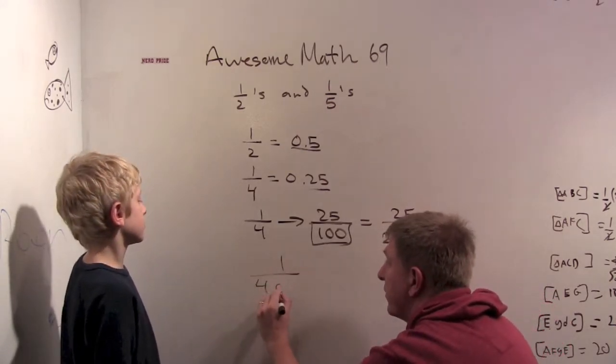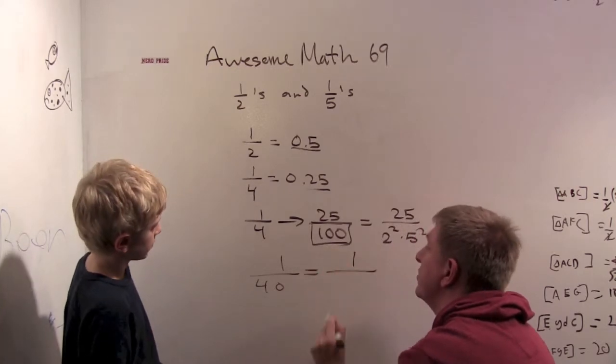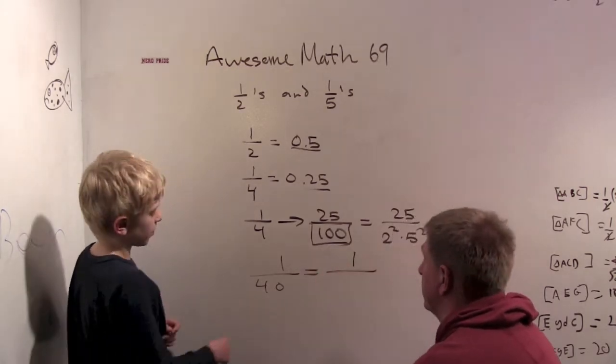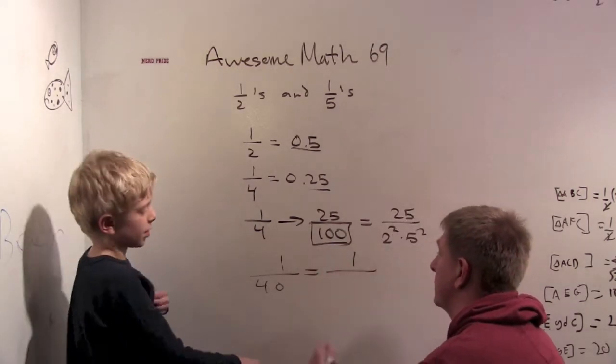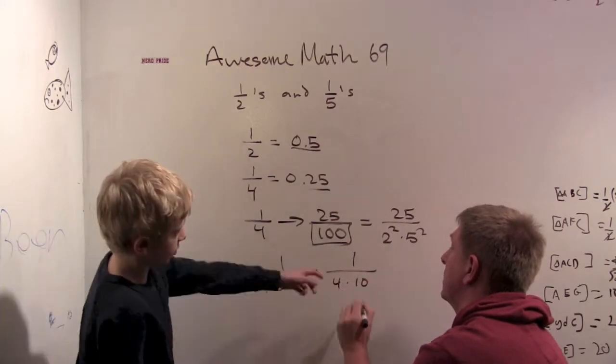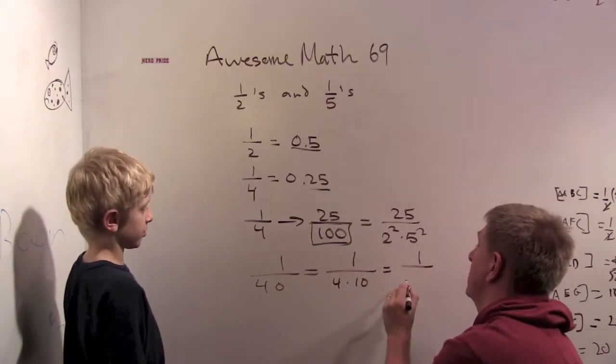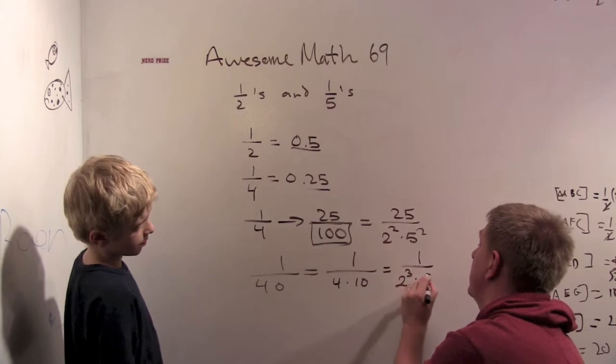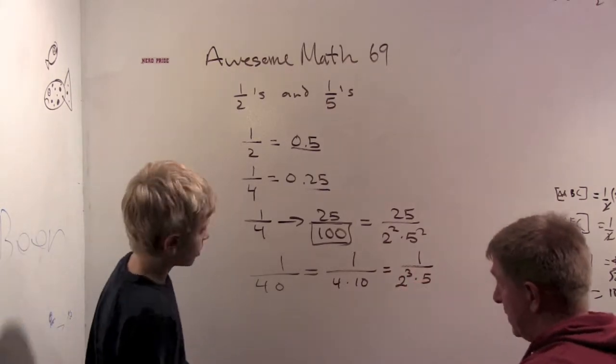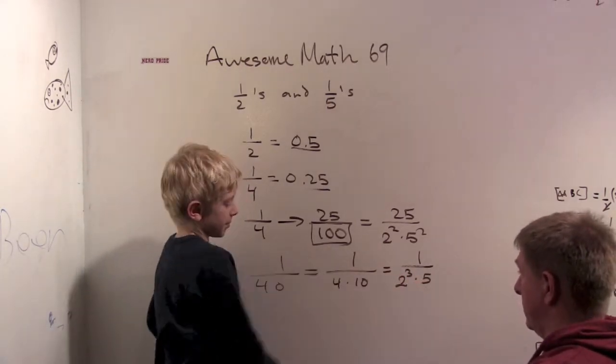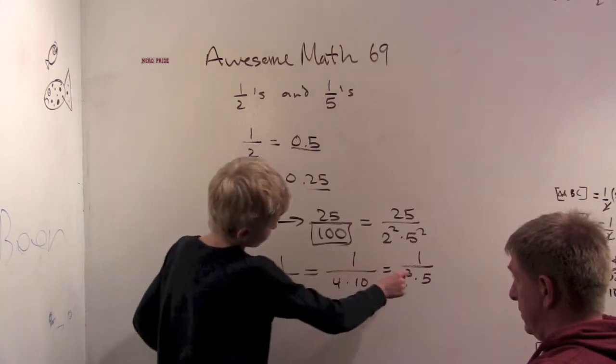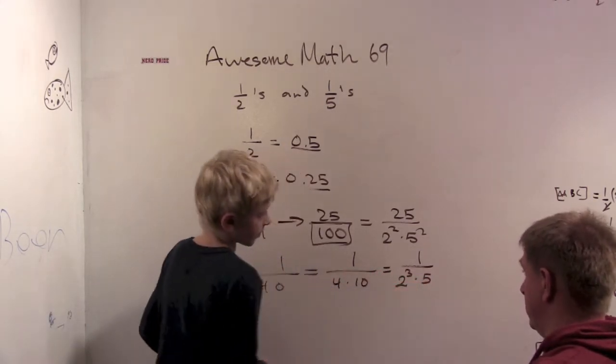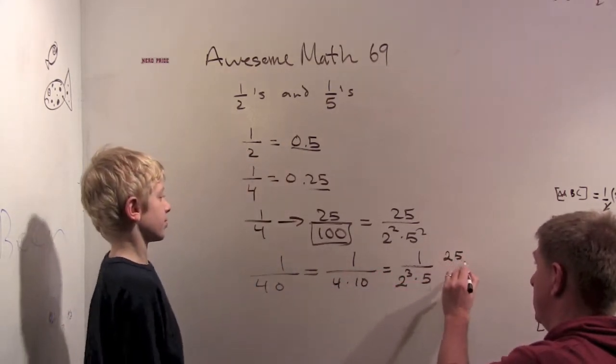Now when I have one-fortieth, what do I have on the bottom? How many twos? You have a four and a two times five, so that would make it three twos. Two cubed times five. So then you need to multiply to get the same number of twos and fives, you need to multiply by twenty-five. Twenty-five is five squared.